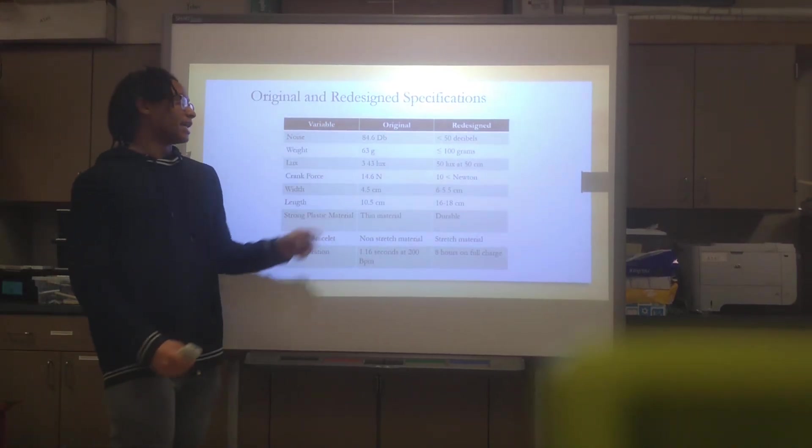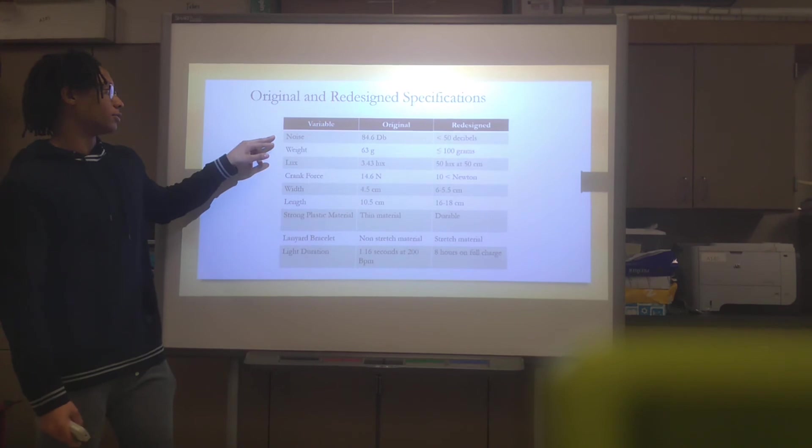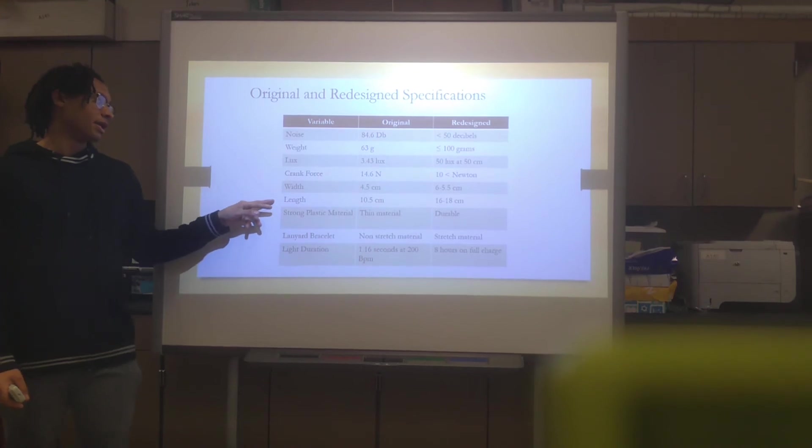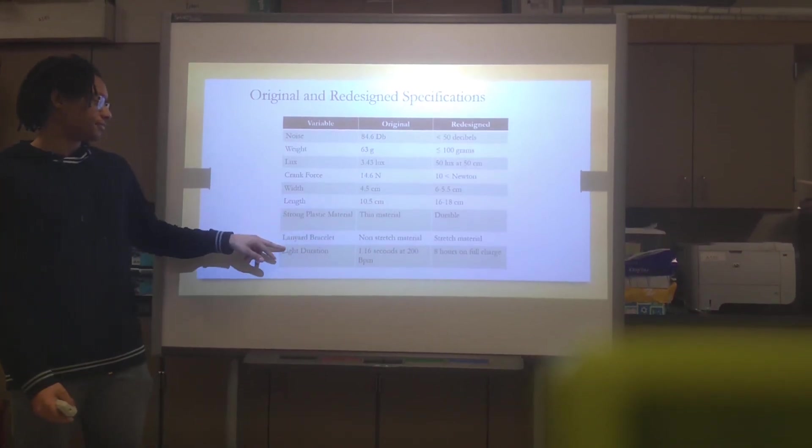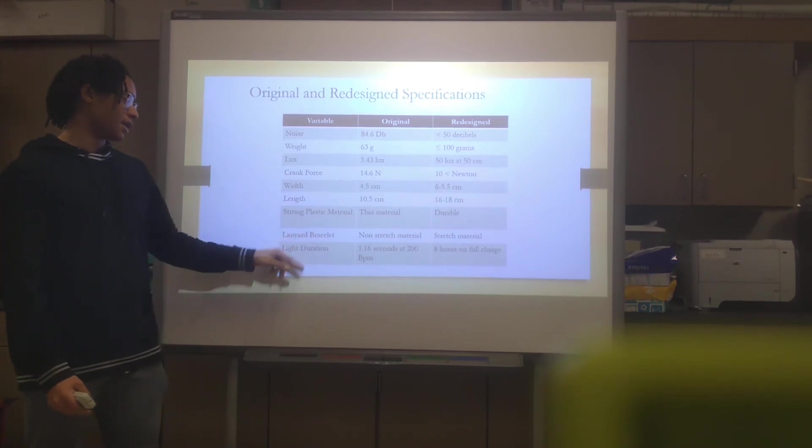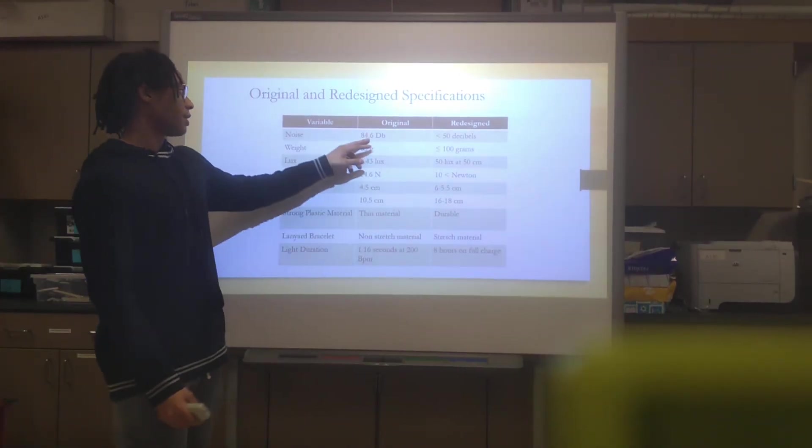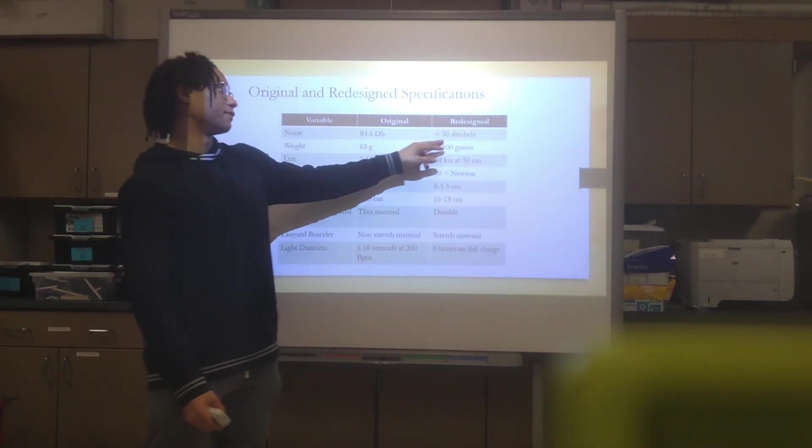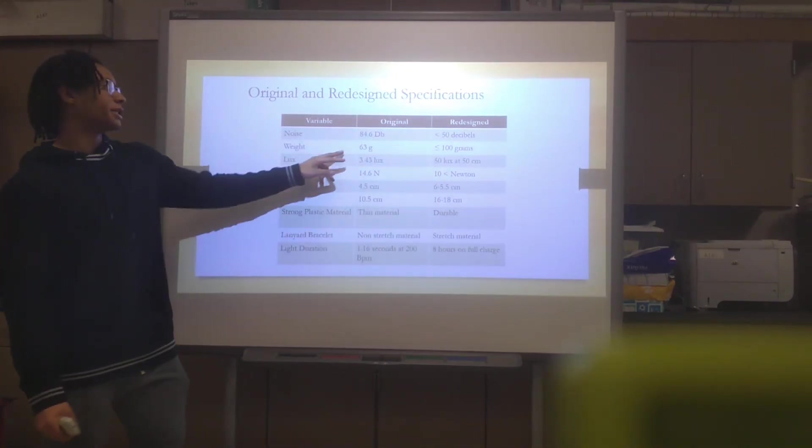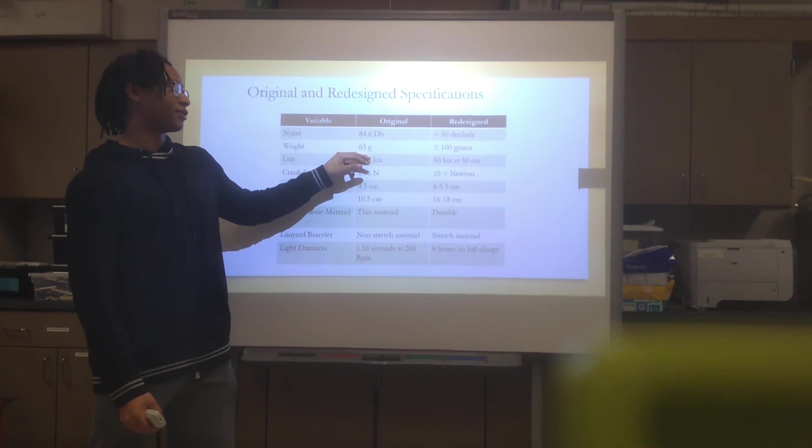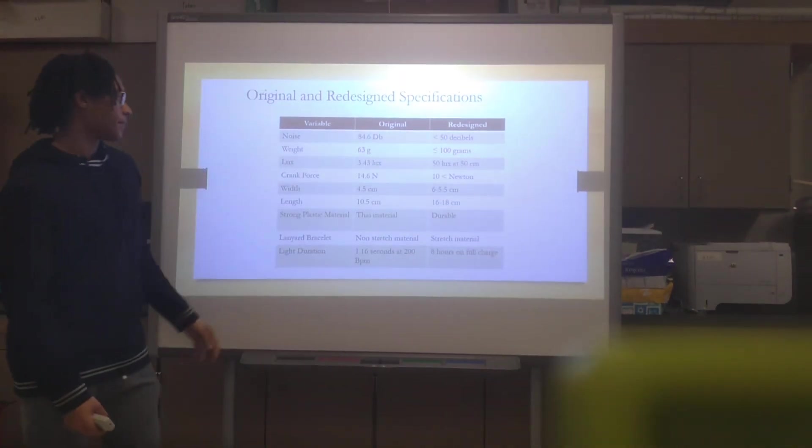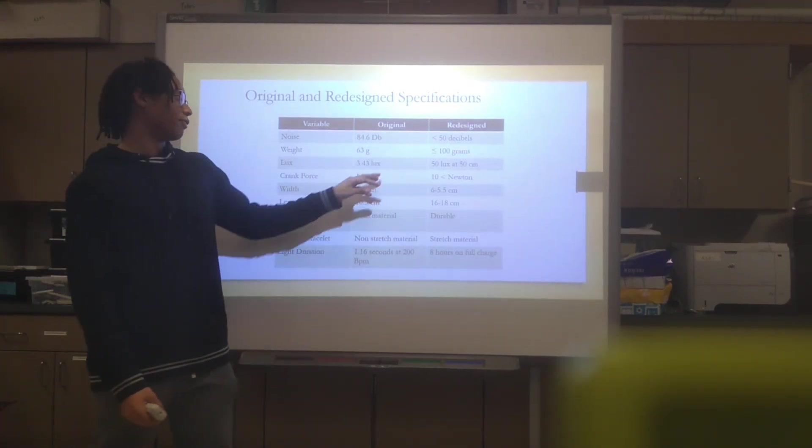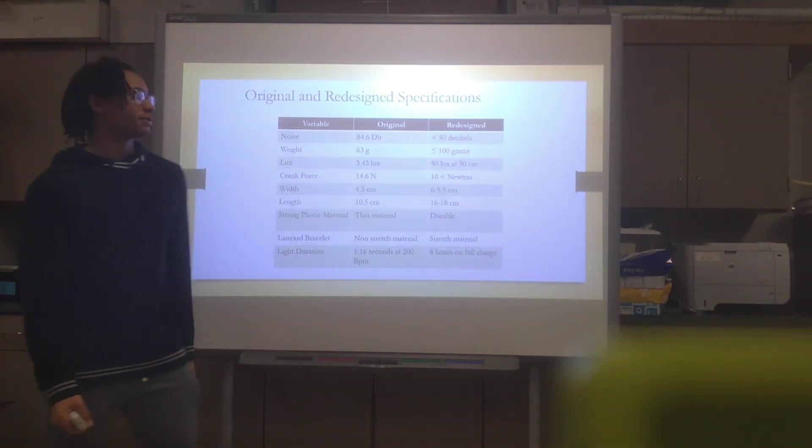Original and redesigned specifications. Here are some of the variables: noise, its weight, lux, crank force, its length, its plastic material, the lanyard bracelet, and its light duration. For the original, it was 84.6 decibels. They felt that it was too noisy, so we brought it down to 50 decibels. Its weight was 63 grams. That wasn't really a factor, so we brought it up to 100 grams. Its lux needed to be improved, so we brought it to 50 lux at 50 centimeters, so it's brighter. Its crank force was 14.6 newtons, which is now brought down to 10 newtons, so you use less hand energy to use the mechanical energy.